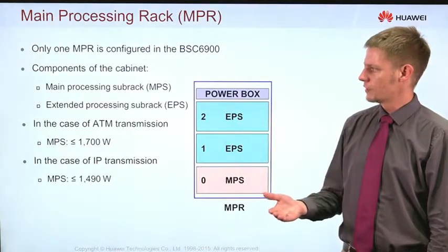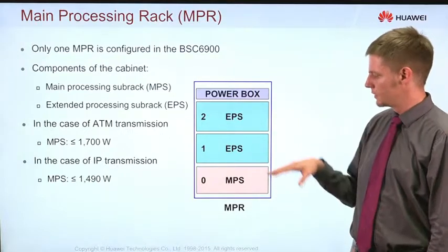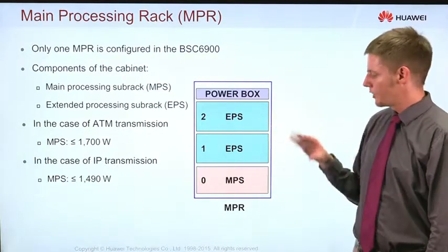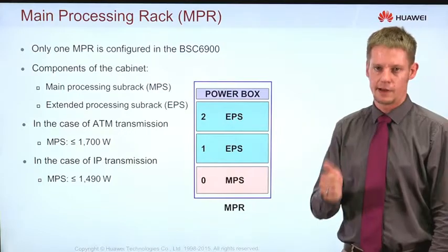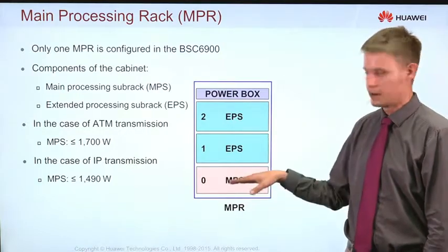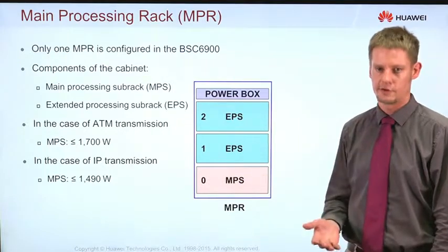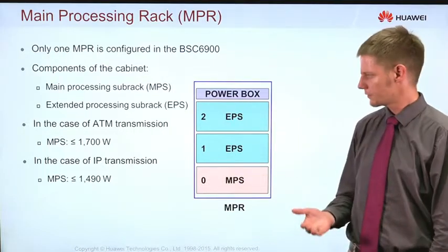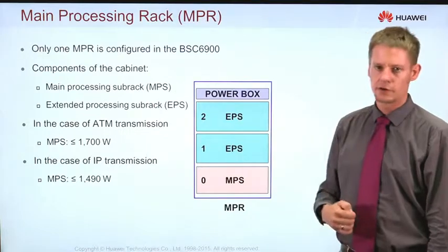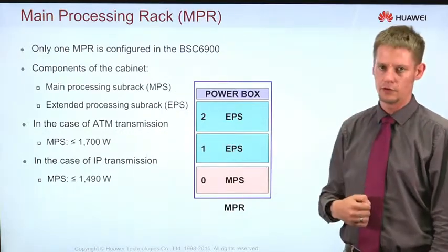In terms of the subracks that are mounted in one rack, we see that we have up to three subracks. We always have at least one subrack — the minimum configuration is one rack with one subrack, subrack 0. Subrack 0 is the main processing subrack and has some power consumption that varies between ATM and IP transmission.